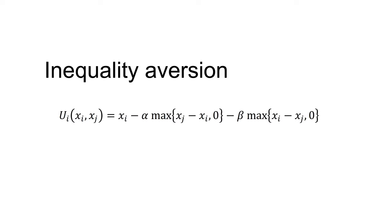An alternative distributional preference model that may explain some of these results is inequality aversion. The idea behind inequality aversion is that people may have a dislike of having less than other people and a dislike of having more than other people. One basic model of inequality aversion comes from the utility function in Fehr and Schmidt 1999. It is of the following form: the utility of agent I, which is a function of the outcome for agent I and the outcome for agent J, equals the outcome for agent I minus alpha times the max of (XJ minus XI, 0) minus beta times the max of (XI minus XJ, 0).